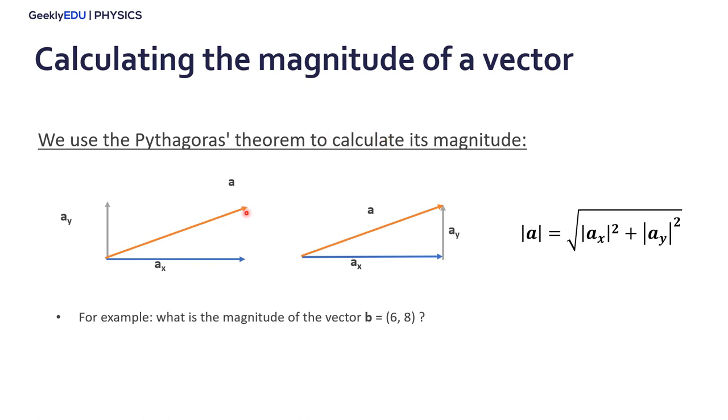For example, what is the magnitude of vector b, 6 and 8? Well, we just apply the Pythagorean theorem. That's the square root of 6 squared plus 8 squared. And it gives us a magnitude of 10.